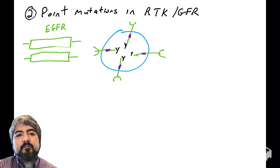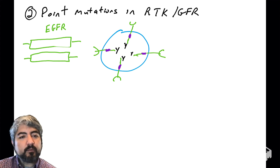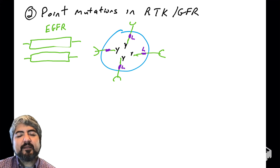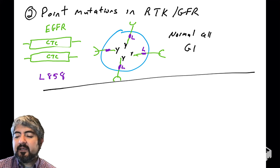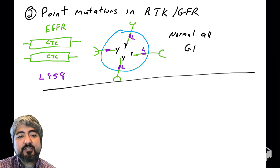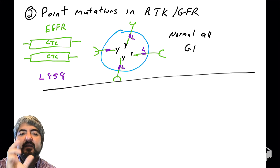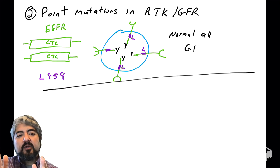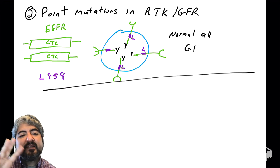The second example is point mutations in the genes that code for receptor tyrosine kinases. This cell has a normal number of copies of EGFR and makes normal protein. Proteins are made of amino acids — I'll draw a leucine that is present at amino acid position 858 in EGFR. The leucine is the normal residue, coded for by the codon CTC in the EGFR gene. Using mutation nomenclature, it's the normal amino acid, then the position number. This is a normal cell: it has the CTC codon coding for leucine at position 858, and that leucine is within the kinase domain.